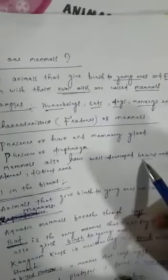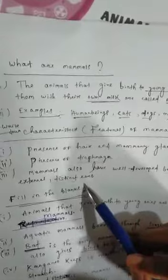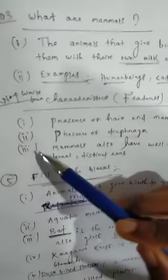Third: Mammals also have well-developed brains and external distant ears. The three main important characteristics or features of mammals.